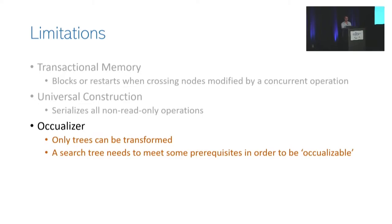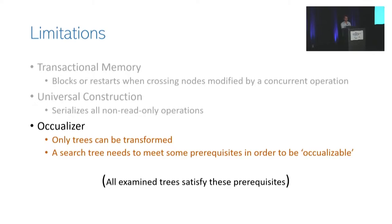In a nutshell, OCCUalyzer is a mechanical transformation, but it is specialized and not general. In our experience, the tree prerequisites are very natural and are met by typical algorithms such as B-trees, red-black trees, and AVL trees. You can construct synthetic counter-example algorithms that don't meet the prerequisites, so the prerequisites are formally needed.